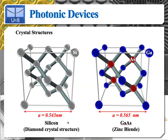Semiconductors such as silicon and gallium arsenide have a little bit more complex crystal structures. Silicon has a diamond crystal structure, which is illustrated right here, and gallium arsenide has a zinc-blende crystal structure, which is similar, but in between the gallium atoms you have one arsenide atom, whereas in silicon you just have silicon atoms everywhere.